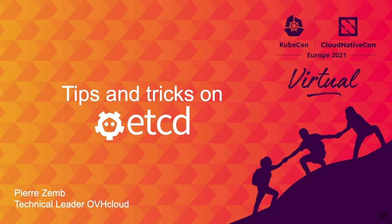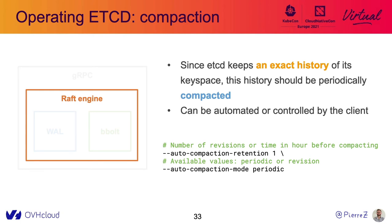Now let's talk about tips and tricks. Since etcd allows clients to be notified of every modification, etcd needs to keep an exact history of its keyspace and all mutations. This history needs to be periodically compacted — otherwise you will just run out of disk. This process is called compaction, and it can be automated directly by the database or controlled by the client. As we are using hundreds of API servers on one etcd cluster, we decided to make it automated by the database — we are running a periodic compaction every hour.